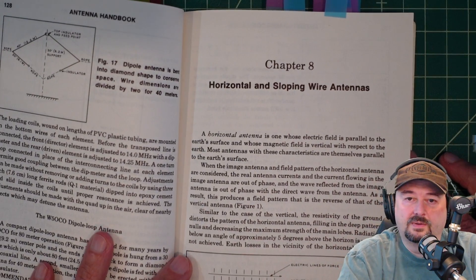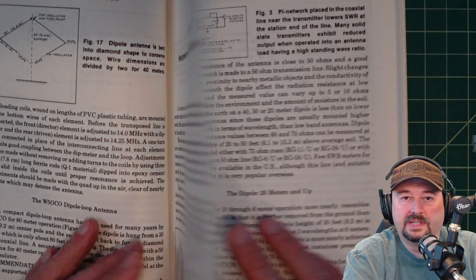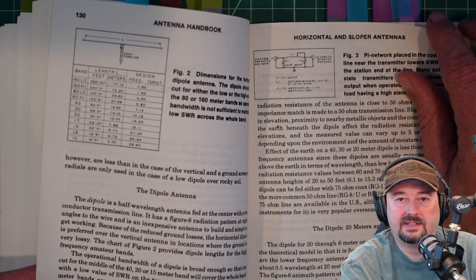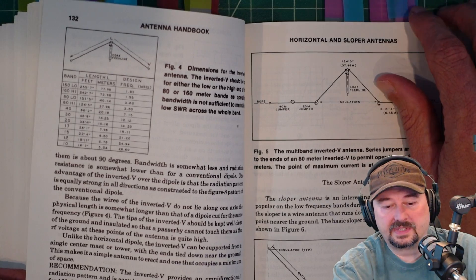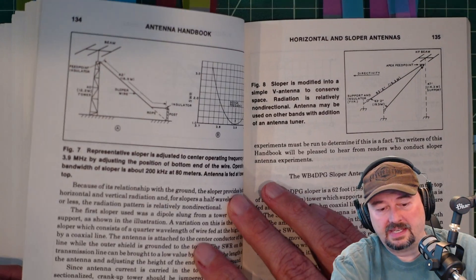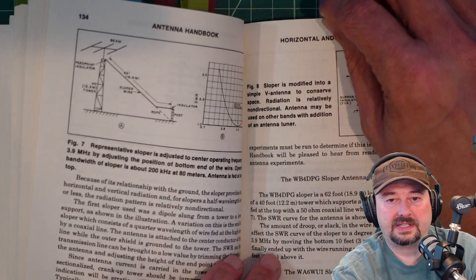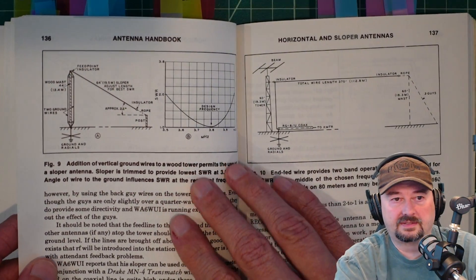Chapter 8 talks about horizontal and sloping wire antennas. And at the beginning of this, they talk about dipoles a lot and then using dipoles on a slope. I'm not necessarily sure that that's something that I would do.